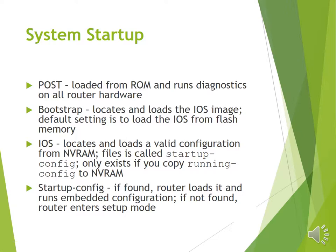The iOS is an operating system that resides inside the router — it is the internetwork operating system. The router then locates and loads a valid configuration from NVRAM. NVRAM contains the file called startup-config, which only exists if you have copied the running configuration to NVRAM. If found, the router loads it and runs the embedded configuration. If not found, the router enters setup mode.